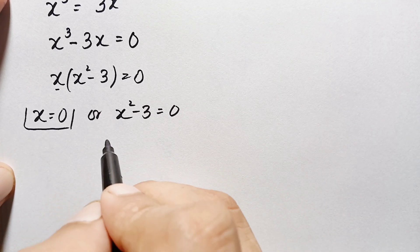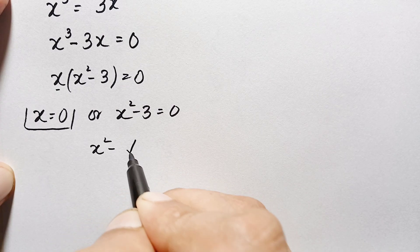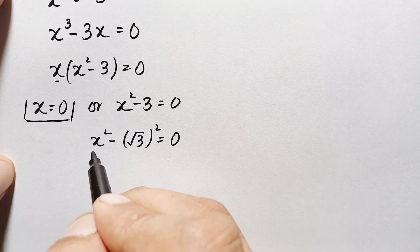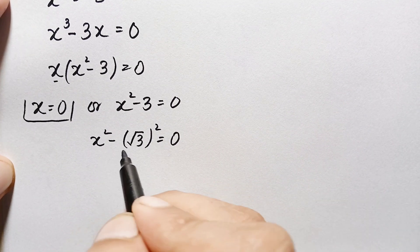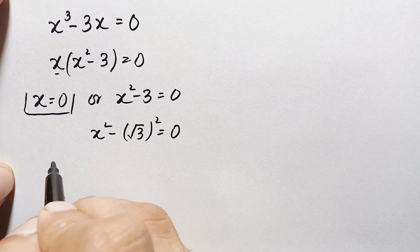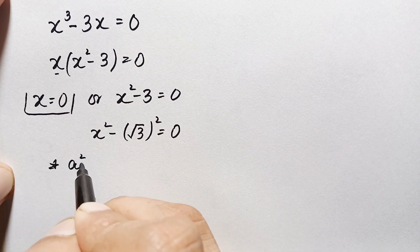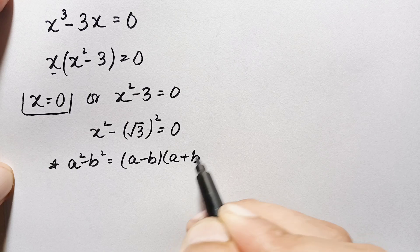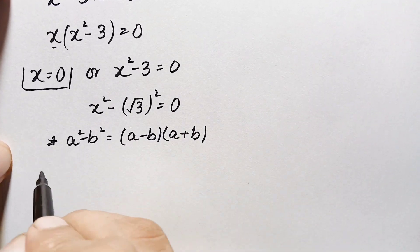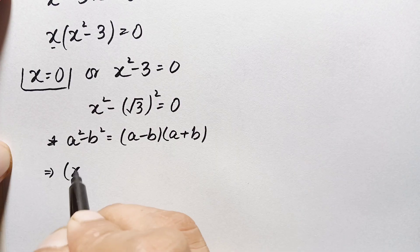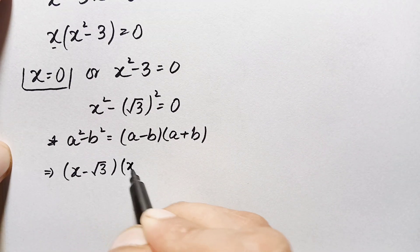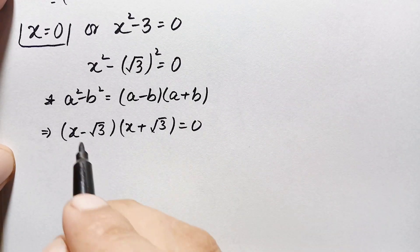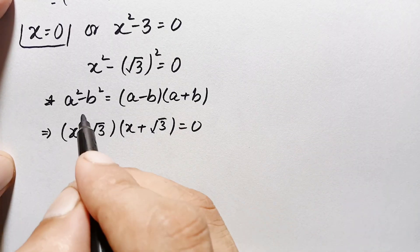Now solving x squared minus 3 equals 0, we rewrite 3 as (√3)², giving x squared minus (√3)² equals 0. This is the algebraic identity a² minus b², which equals (a minus b)(a plus b). Applying this identity, we get (x minus √3)(x plus √3) equals 0.